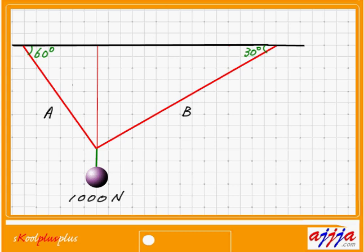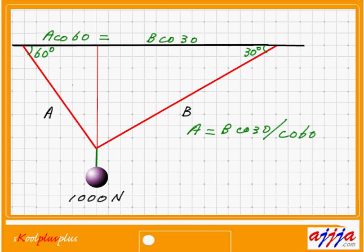Now for a new problem, I'll split into two right triangles again. X component first: B cosine 30 on one side and A cosine 60 on the other side. By equilibrium they're equal, so A equals B cosine 30 divided by cosine 60. Cosine 30 is square root 3 over 2, and cosine 60 is 1 over 2, so this simplifies to A equals B times square root 3.